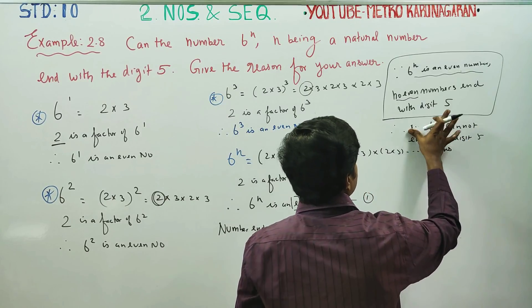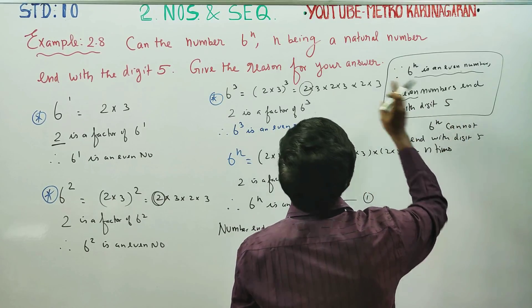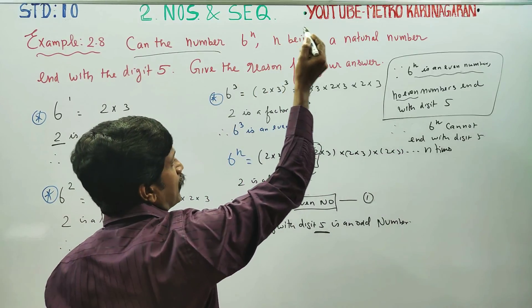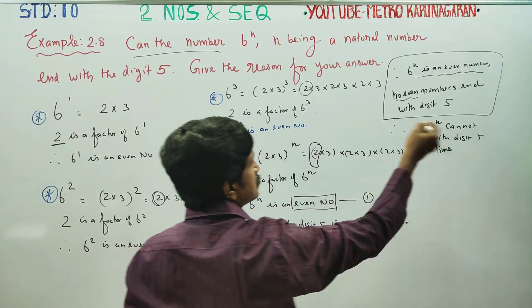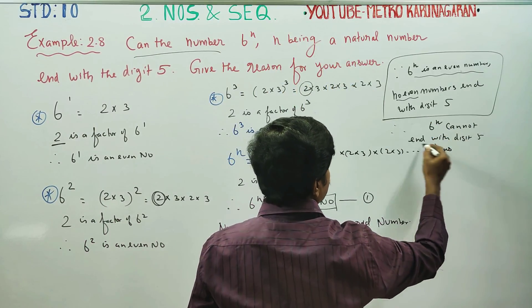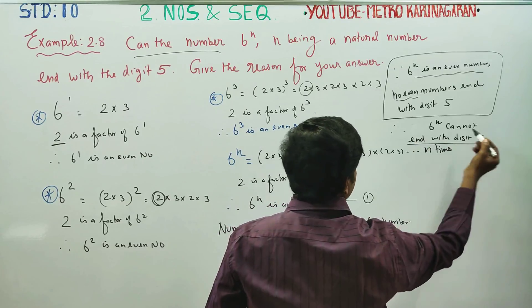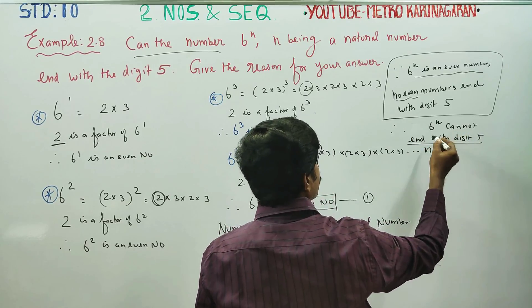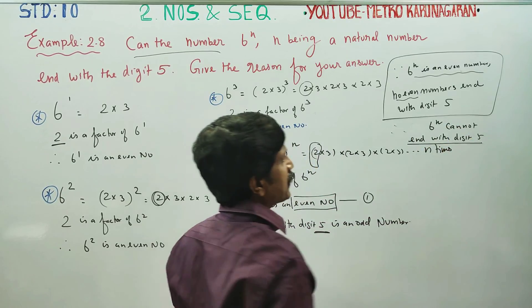No. 6 power N cannot end with digit 5. The answer is no.